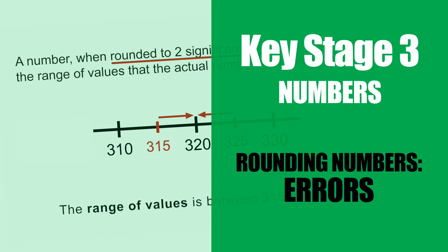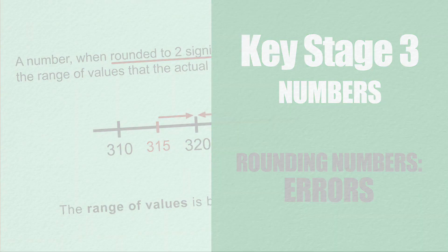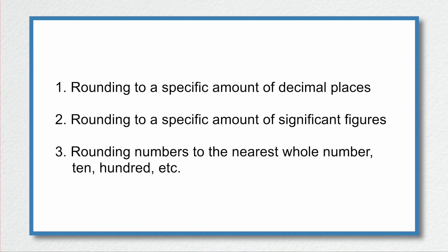So we're going to be looking at errors in rounding. Over the past three videos we've been looking at various approaches to rounding numbers — using decimal places, using significant figures, and rounding to the nearest whole number, ten, hundreds, and so on.